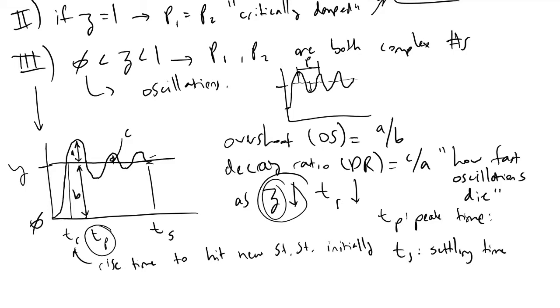As zeta is decreasing, as our damping coefficient is decreasing, so is our peak time. Then finally ts tells us the settling time, which is how long to get within 95 to 105 percent of the new steady state value.